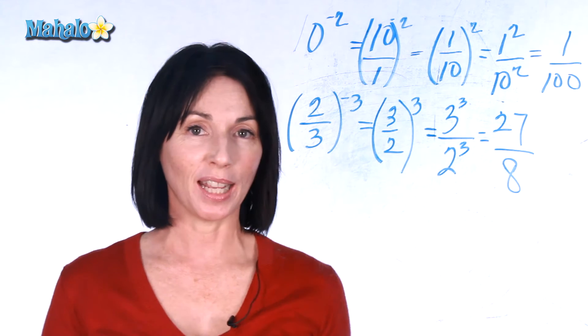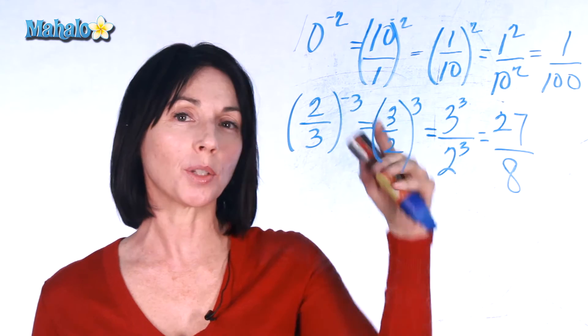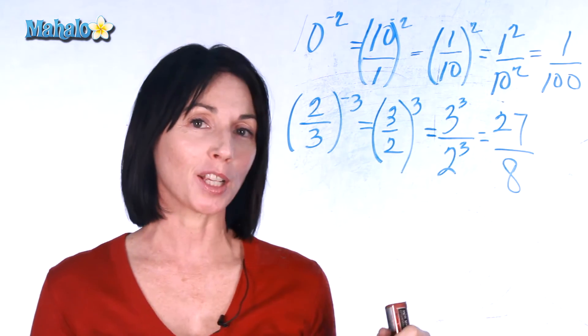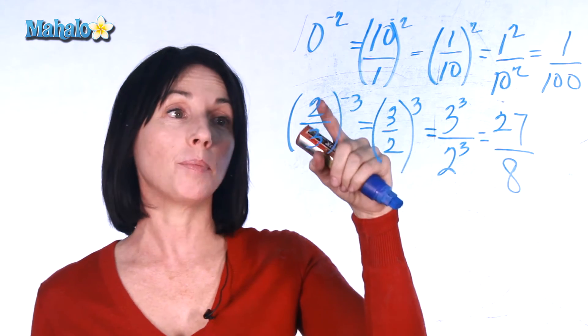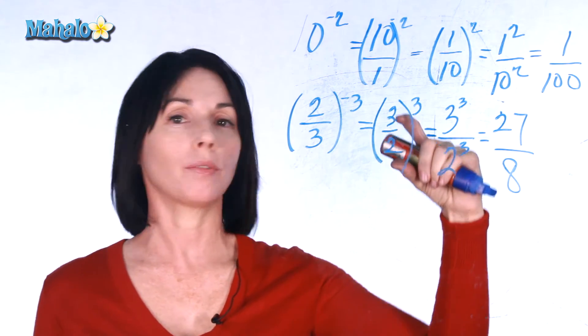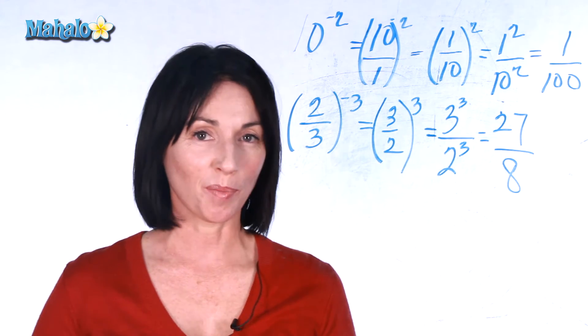And that's how negative exponents work. Anytime you have a whole number, feel free to put a 1 under it so it looks more like a fraction. Then you can take the reciprocal of it and change the exponent positive. And anytime you have a fraction like this it's pretty straightforward, you just flip it upside down and make your exponent positive. And that's how negative exponents work.